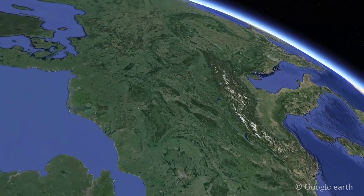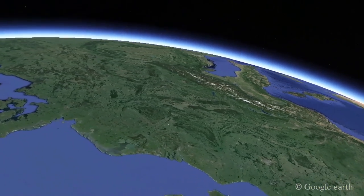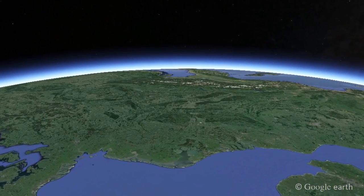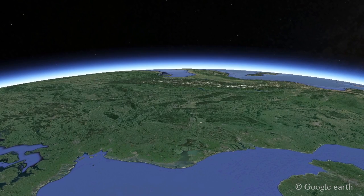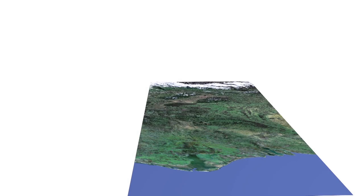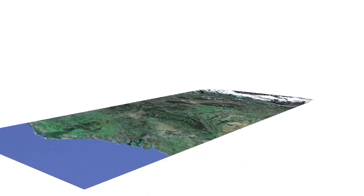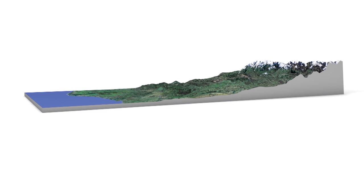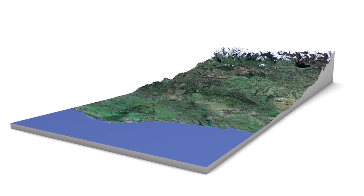The water that travels from the mountains to the sea through the river also carries sediment. The sediment is usually eroded over the river's upper course, transported through its middle course, and deposited near its mouth. A river flows over the sediment that it transports at the same time.